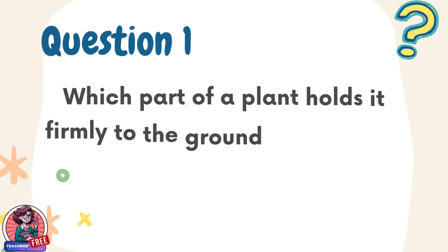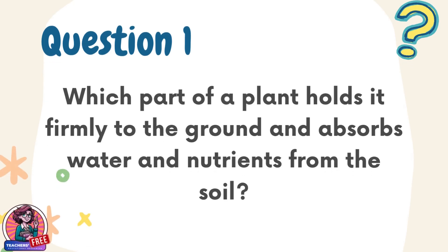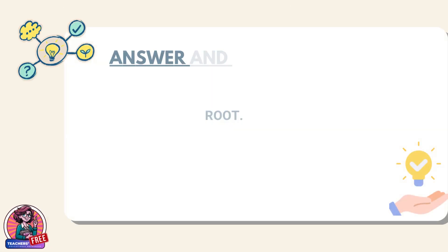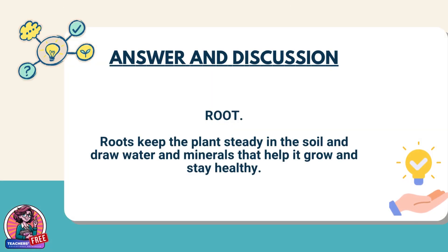Question 1. Which part of a plant holds it firmly to the ground and absorbs water and nutrients from the soil? Answer: Root. Roots keep the plant steady in the soil and draw water and minerals that help it grow and stay healthy.